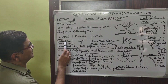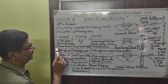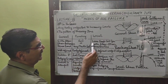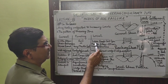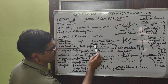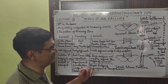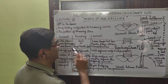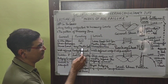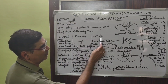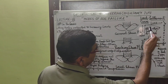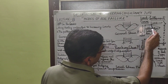In general shear failure, there is brittle stress-strain behavior. In punching shear failure, the soil is very plastic. In local shear failure, there are plastic stress-strain characteristics. General shear failure usually occurs in dense sand, punching shear occurs in very plastic soils, and local shear occurs in loose sands.